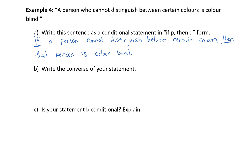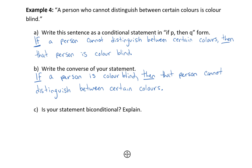So now my converse statement says: if a person is colorblind, then that person cannot distinguish between certain colors. The last part is to evaluate whether or not the statement is bi-conditional. A statement is only bi-conditional if both the conditional statement and the converse are true. The first — if a person cannot distinguish between certain colors, then that person is colorblind — is true. The second — if a person is colorblind, then that person cannot distinguish between certain colors — is also true. So if both are true, it's bi-conditional.